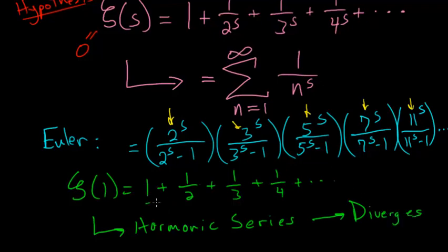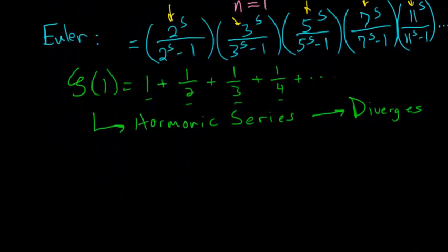Or in other words, as you add more and more of these terms, then the sum will start to approach infinity. Though it approaches infinity very, very slowly. And for numbers bigger than 1, the zeta function actually converges.